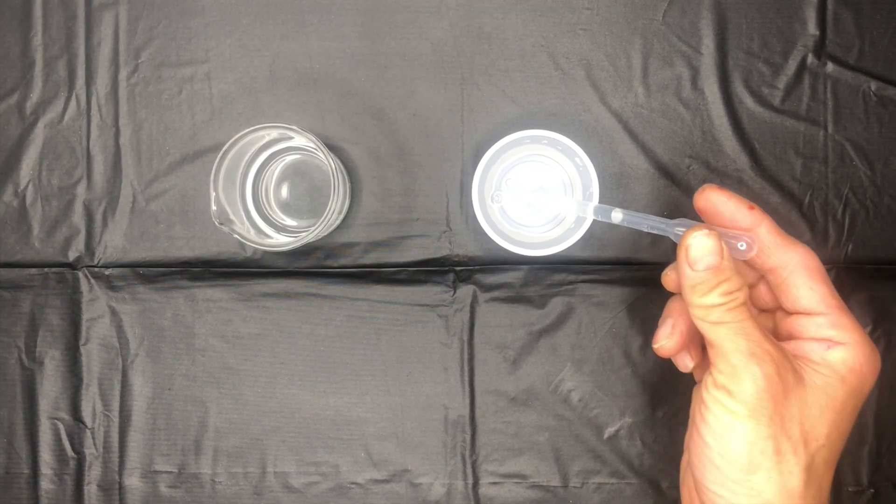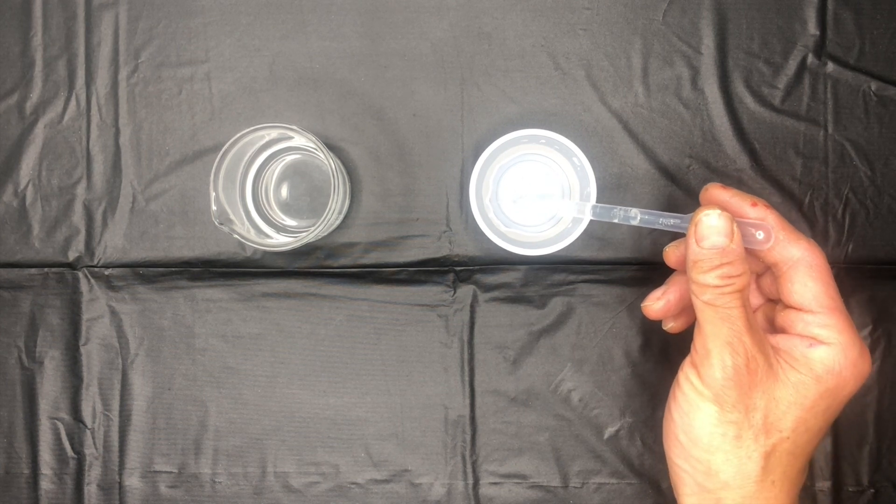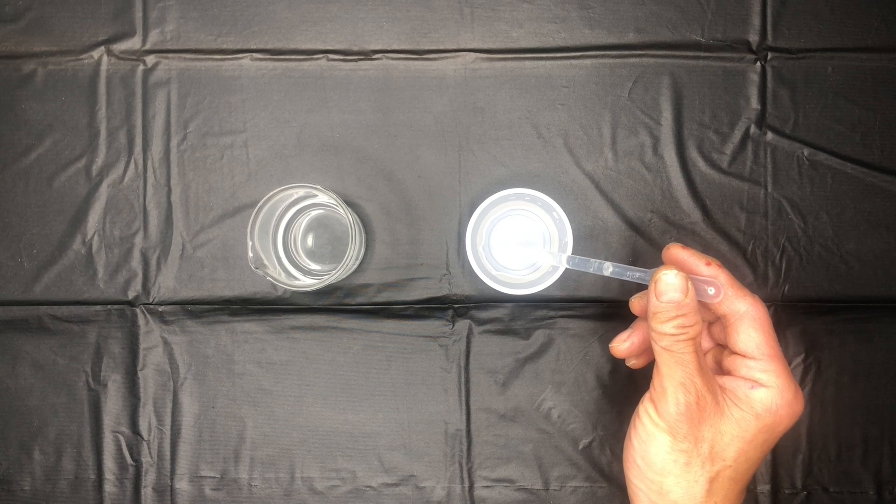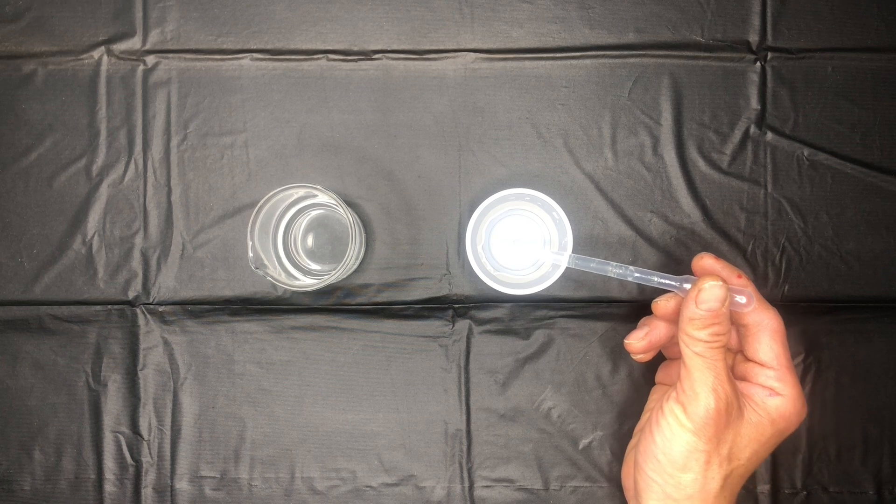To begin, you're going to fill up your pipette with the sodium alginate. The sodium alginate is a polymer—it's a polysaccharide found in brown algae. It is the sodium salt form of alginic acid, and you will add it dropwise into your calcium chloride solution.